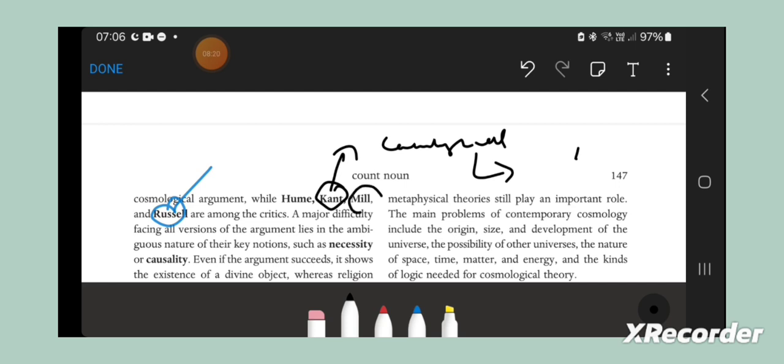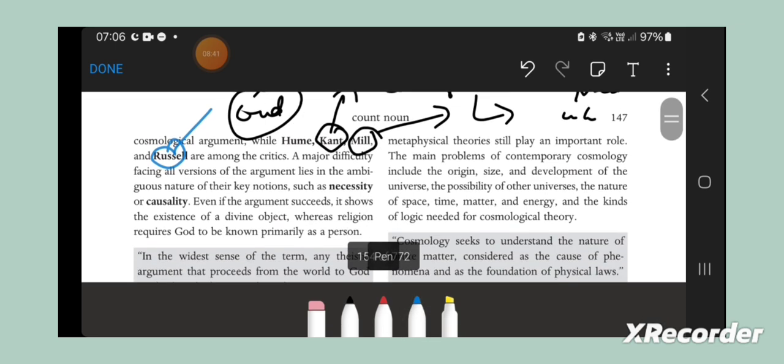And Mill, in his autobiography, I think he says that his father said to him, 'Never ask the question who created the universe or who caused the universe, because then you would have to ask the question who caused God.' And Russell mentioned that in his autobiography as well.